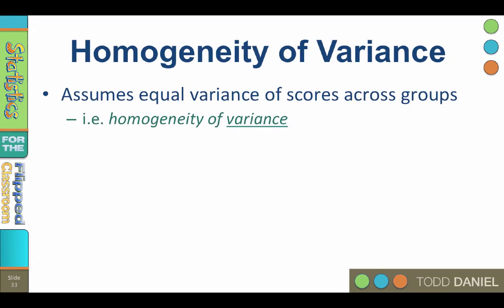Let's revisit that assumption of homogeneity of variance. The one-way ANOVA test assumes that there is equal variance of scores across groups, i.e. homogeneity of variance. Homogeneity means of the same nature, or the same kind of variability.